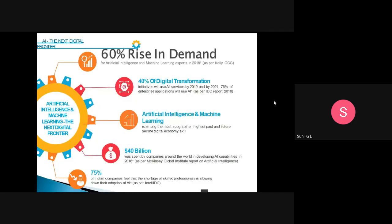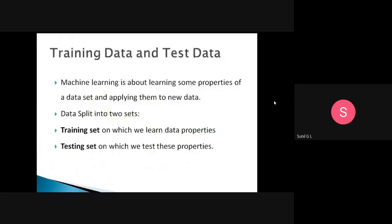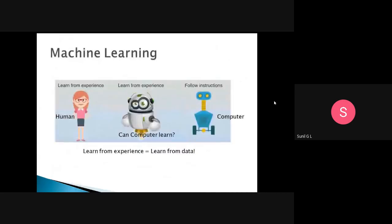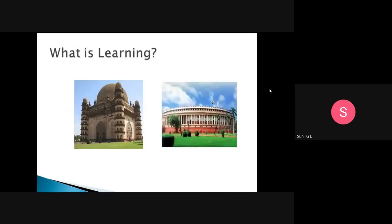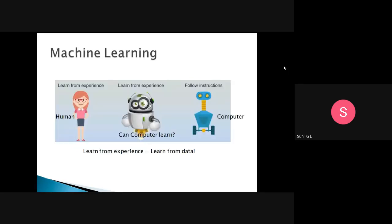In the previous class, we discussed about what is machine learning. We discussed what is learning, and after that, what is machine learning. Machine learning is nothing but: a human can learn from experience, and a machine can learn from data. That is what we call machine learning.